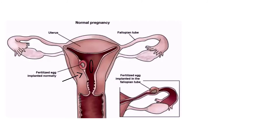This is the uterine cavity inside. The ovary will release an egg, the sperm will travel down the fallopian tube, and where they meet is where fertilization occurs. Then eventually the egg will travel back down the fallopian tube and implant into the uterus.